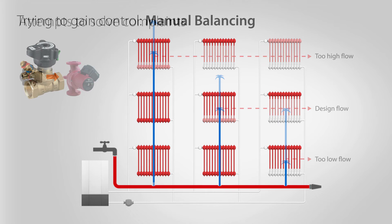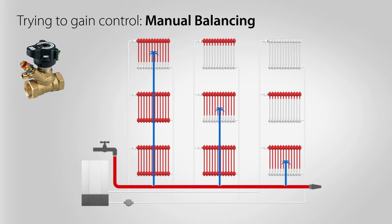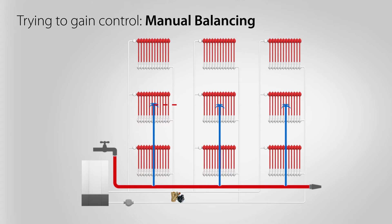Another attempt to gain control of the problems is to install manual balancing valves. These will ensure correct water flow through the radiators, no matter how close to or far away from the pump they are.